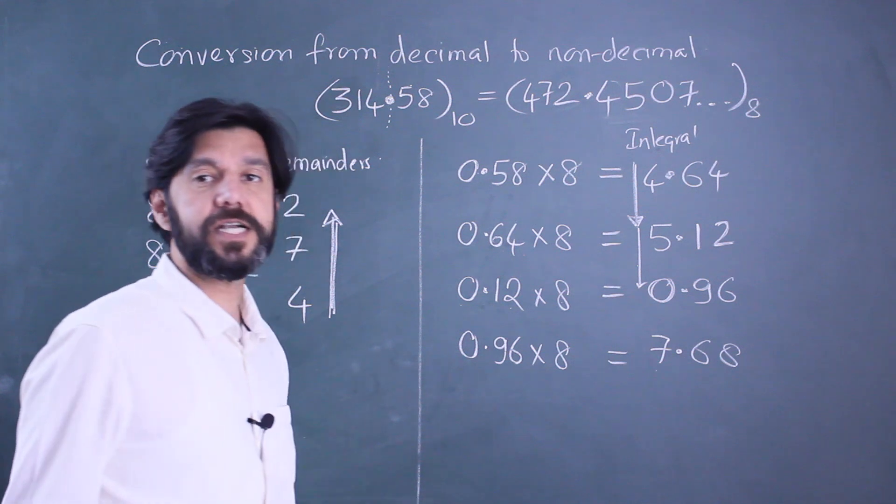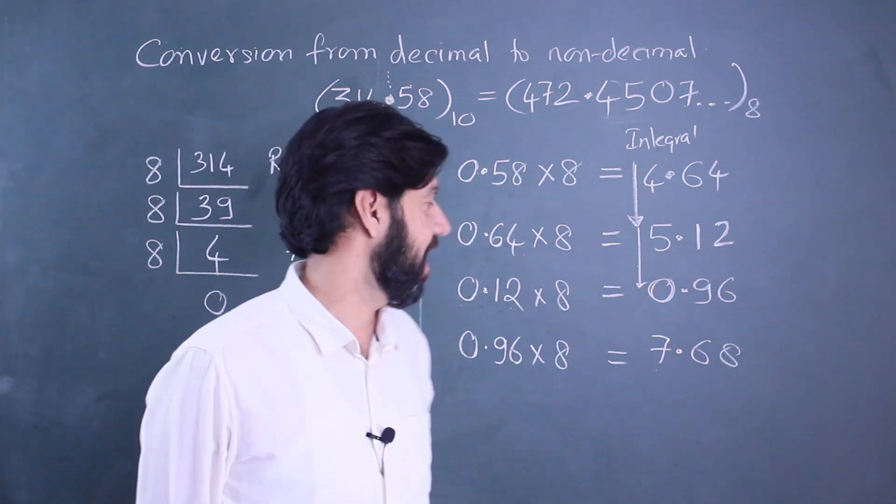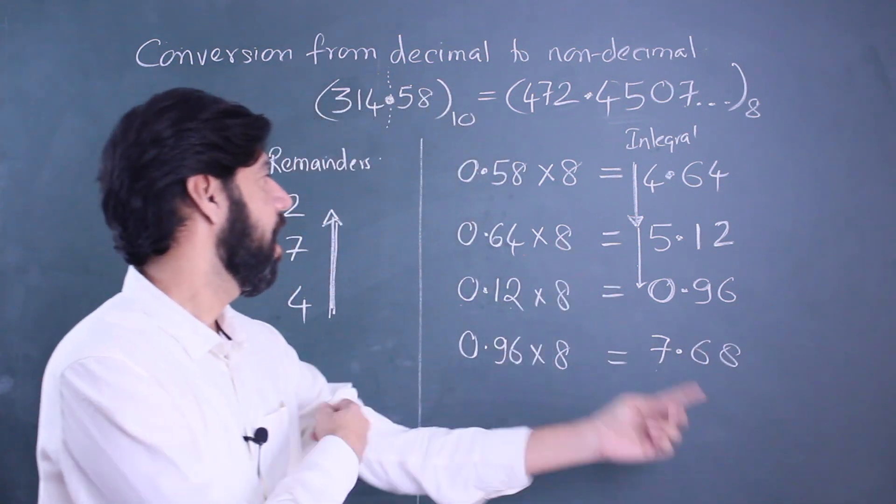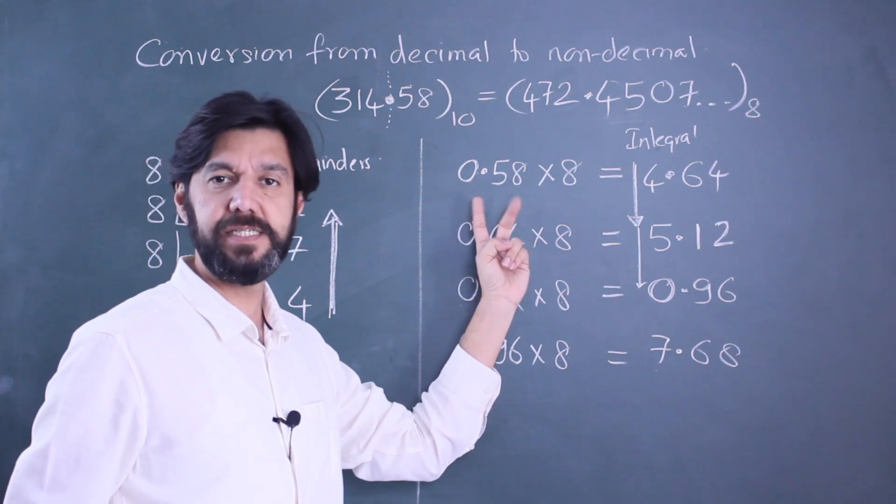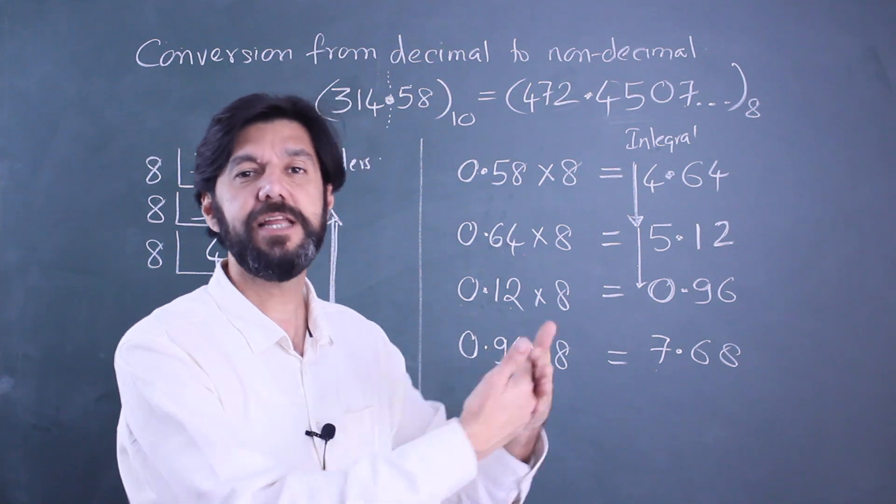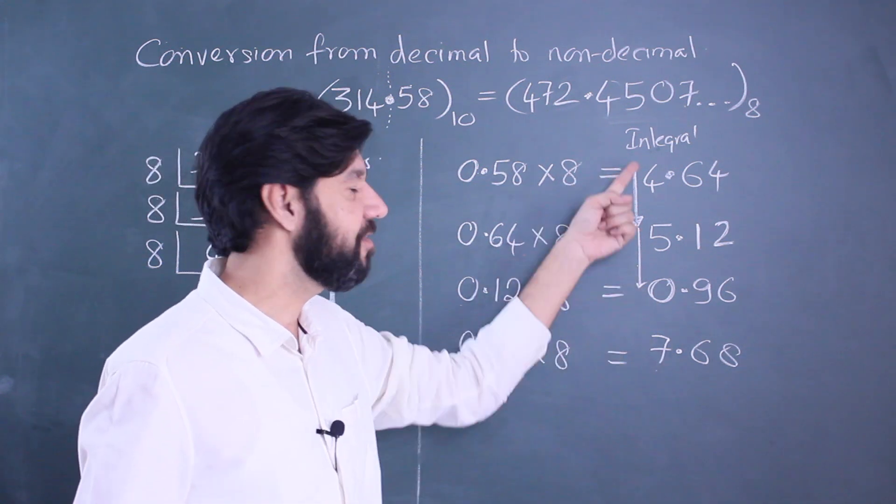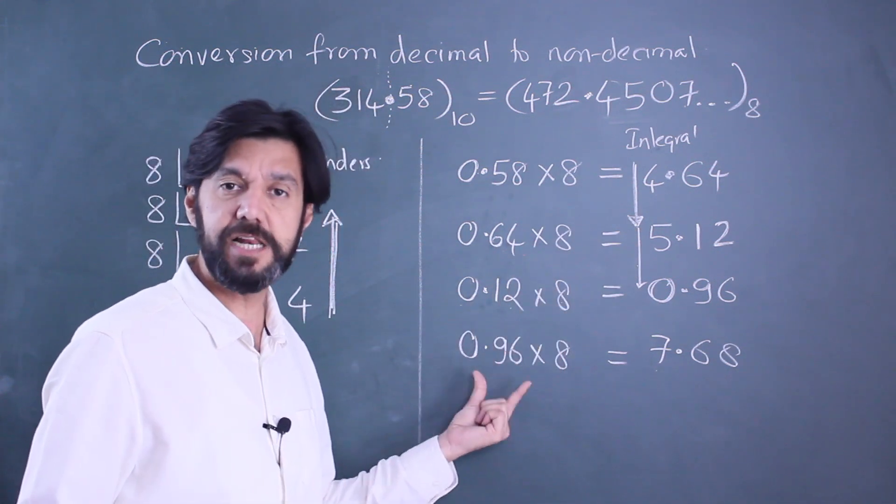This is going to be the octal equivalent of 314.58. If I just need to add one sentence here: we are going to multiply a decimal part with 8, so the product has to definitely be less than 8.